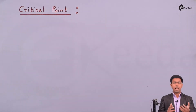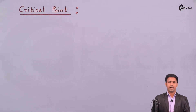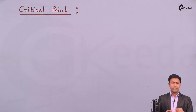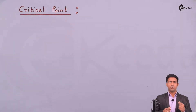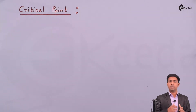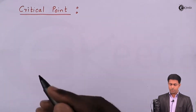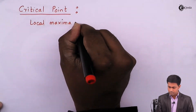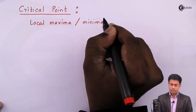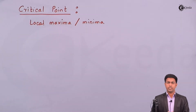Welcome back to the next video of curve tracing where we are going to learn the second characteristic of curve tracing, that is the critical point. Critical point is a very important characteristic which helps us find out the shape of the curve between two points. Local maxima or minima occur at critical points.